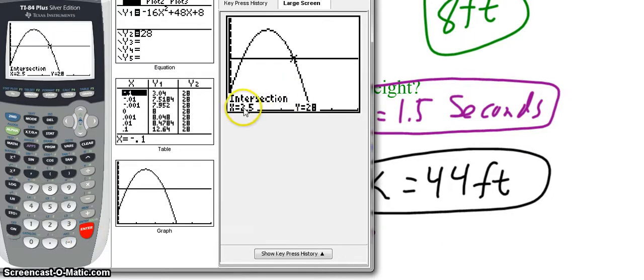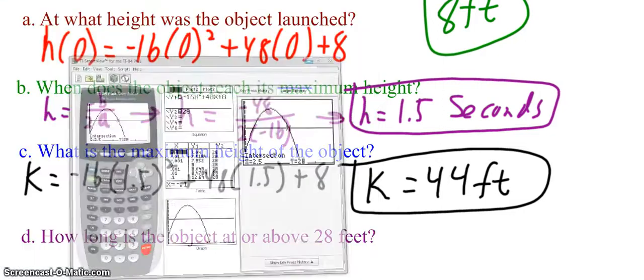So it told me the intersection was at 2.5 comma 28. So I don't care about the 28 because I knew that's where the height was going to be. For right now, I'm just going to mark down the time, T equals 2.5 seconds.